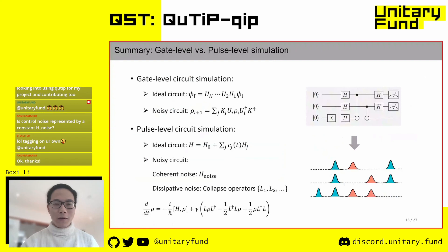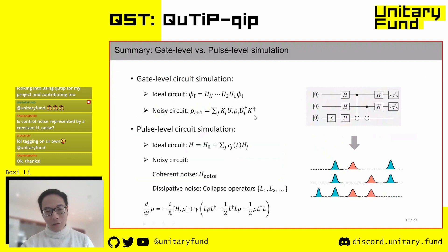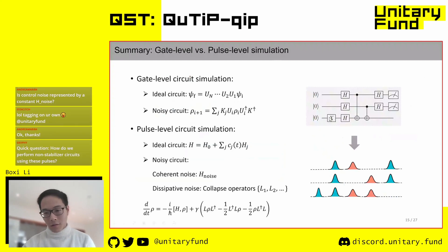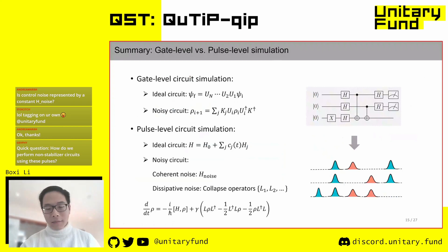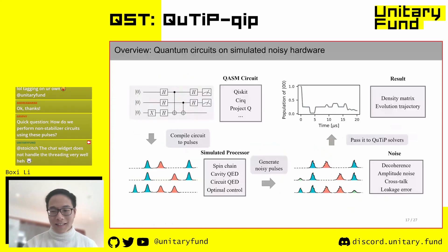Just a short summary before moving on. In the first part, I showed you the comparison between gate-level and pulse-level circuits, how they are described in different languages—unitary versus time-dependent Hamiltonian—and how noise is represented in both. They describe the same effects, but in completely different ways: on one side you have discrete unitaries, on the other you have a continuous time evolution. The mapping between them is realized by the package I'm about to introduce: QuTiP-QIP.